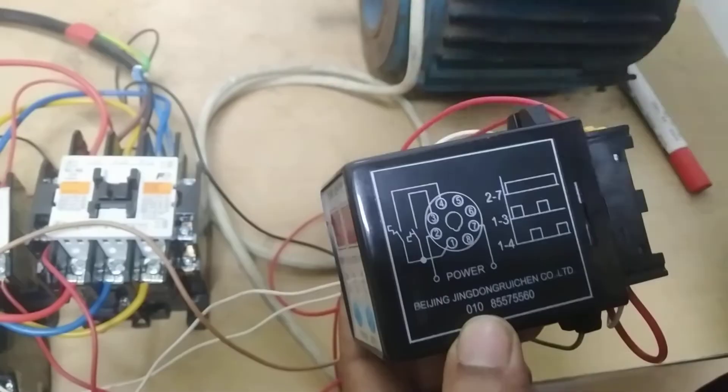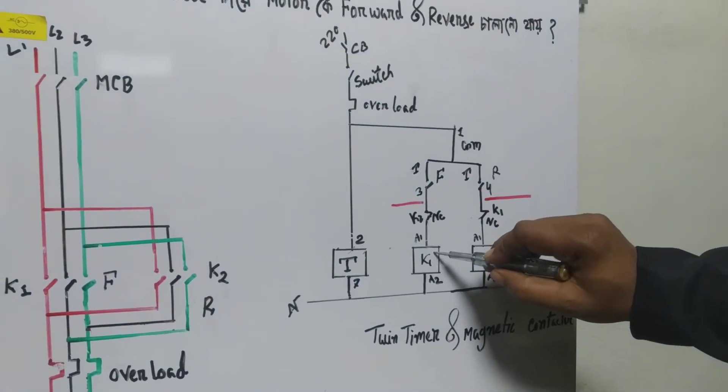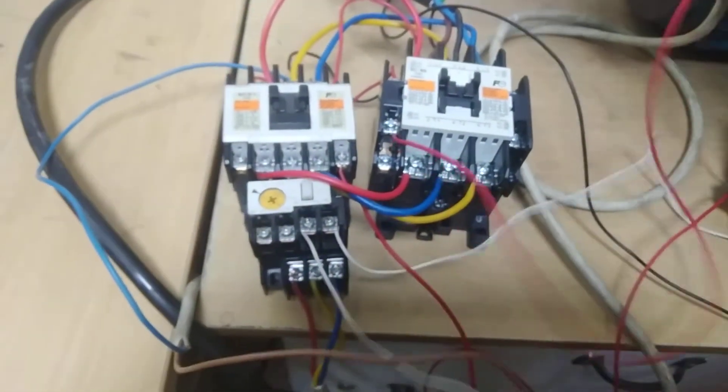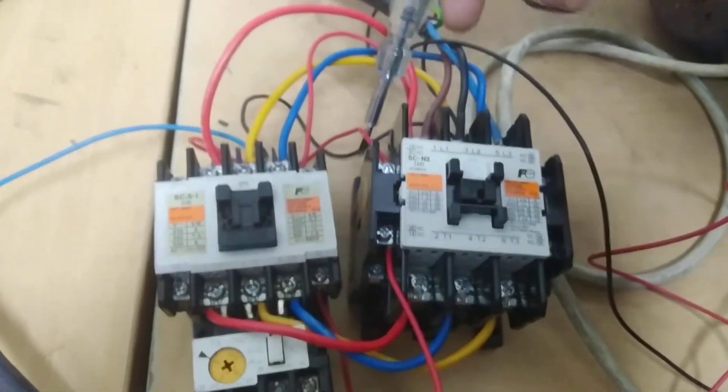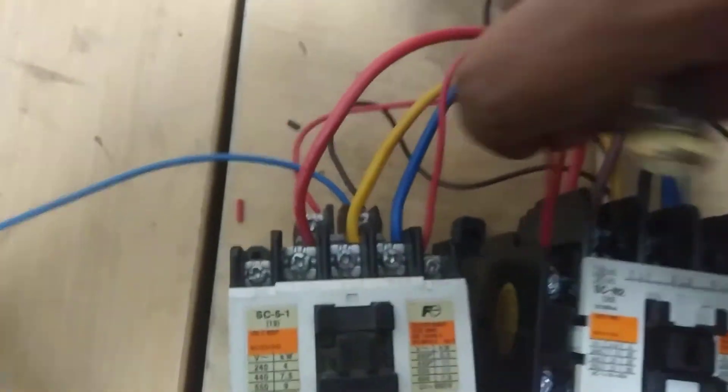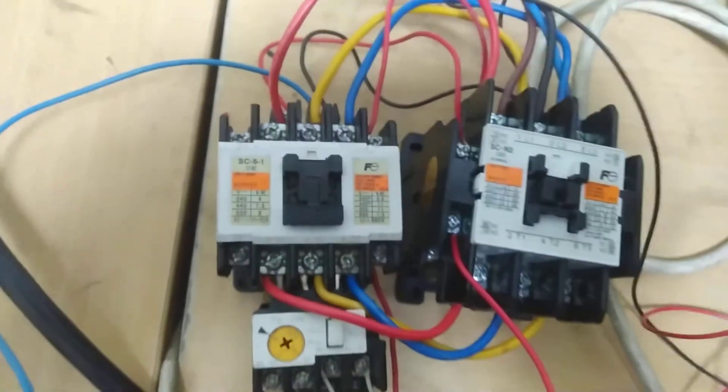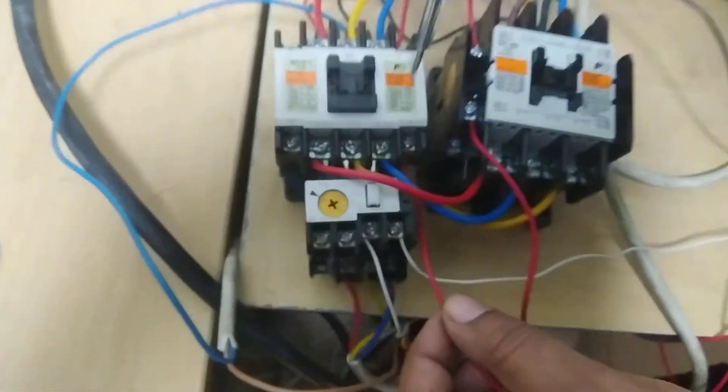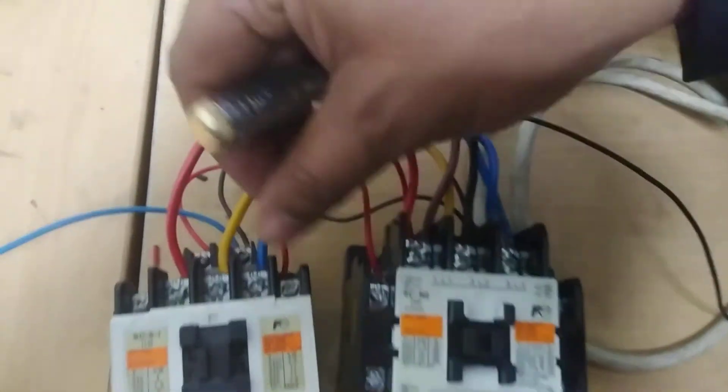This connects to the forward magnetic contactor K1 coil. The reverse magnetic contactor K2 has a normally closed contact from terminal 4 for interlocking between the contactors, preventing both from activating simultaneously. The reverse contact goes to K2.